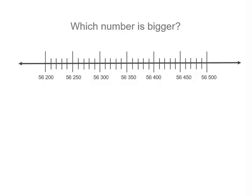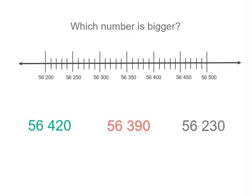So our number line goes from 56,200 to 56,500 because all of our numbers have 56,000 in them, but the hundreds change. So we're going to actually see how we can plot them on the number line.